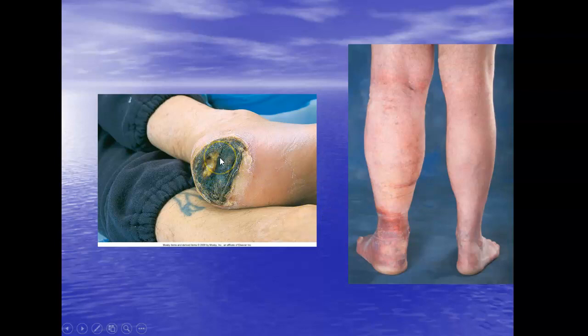This is called eschar — it's the dead tissue and purulent drainage that has come out and formed a dry, hard, caked film over the wound. It will never heal like this. The person needs a procedure, essentially a surgical procedure, to have all that dead tissue scraped off until they get to good, clean, viable tissue. Then it's going to need a lot of wound care to ever get it to heal again.